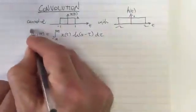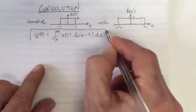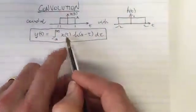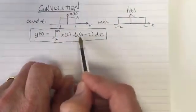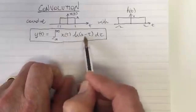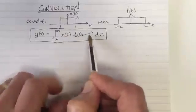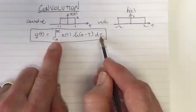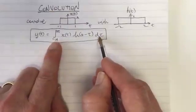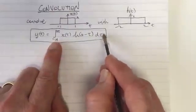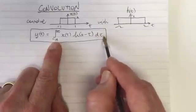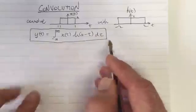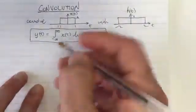We first need to remind ourselves what this means. We've got two functions multiplied by each other — x(τ) and h(t minus τ) — so you multiply the functions, and then this integral means you add up the area under the functions. You're plotting them with respect to τ, because you're going to integrate over τ.